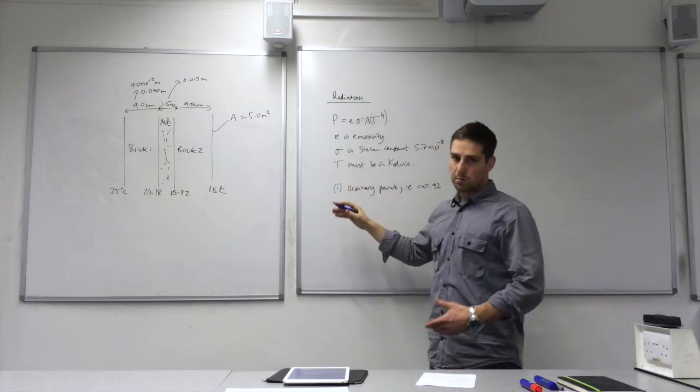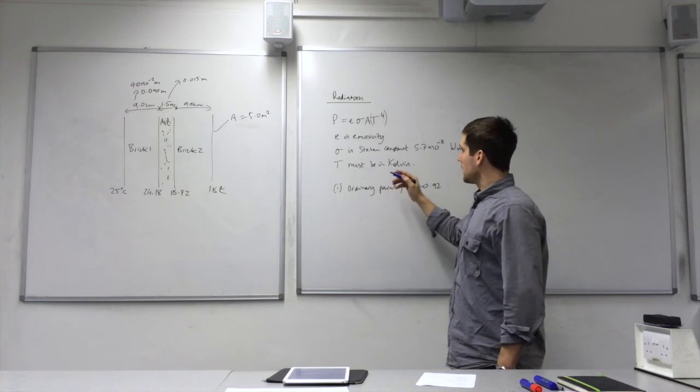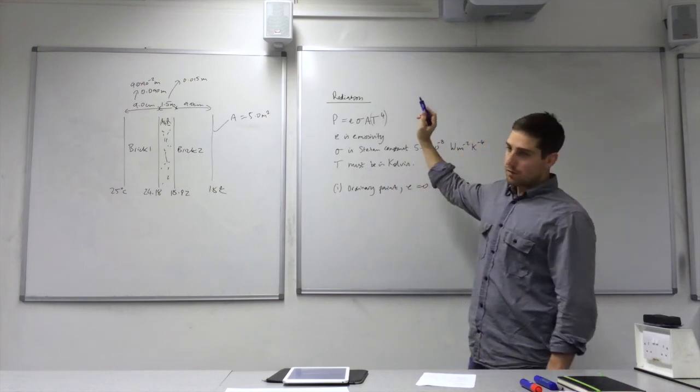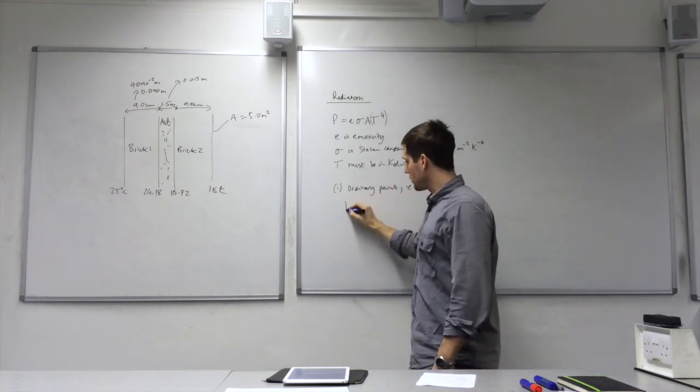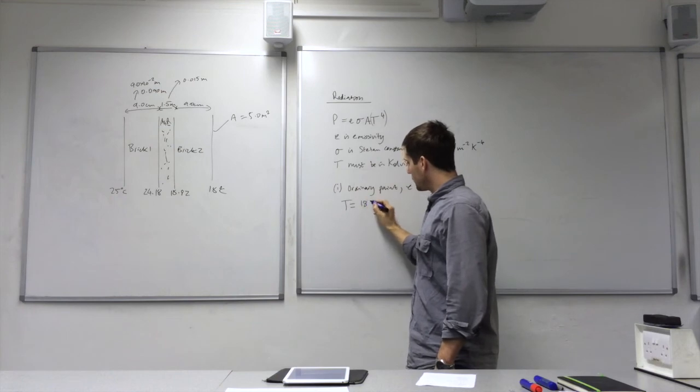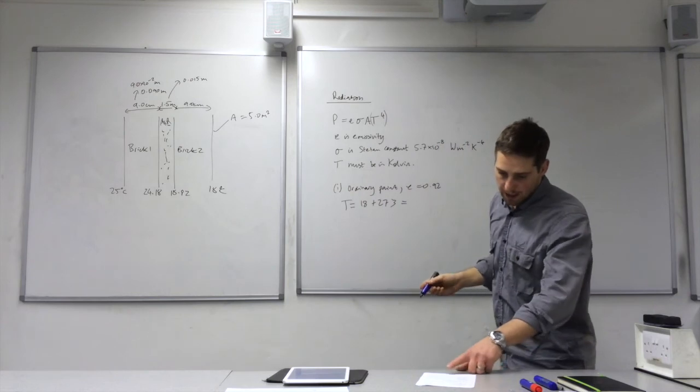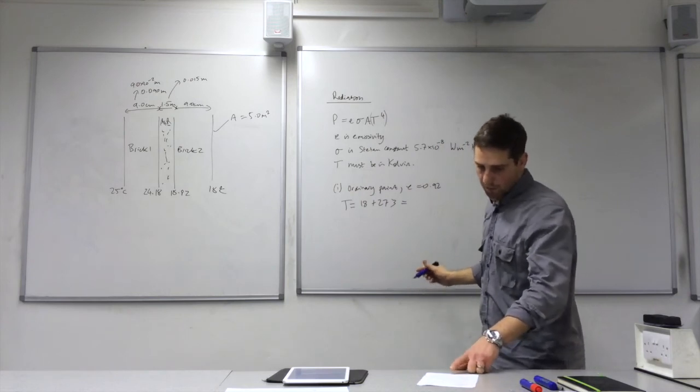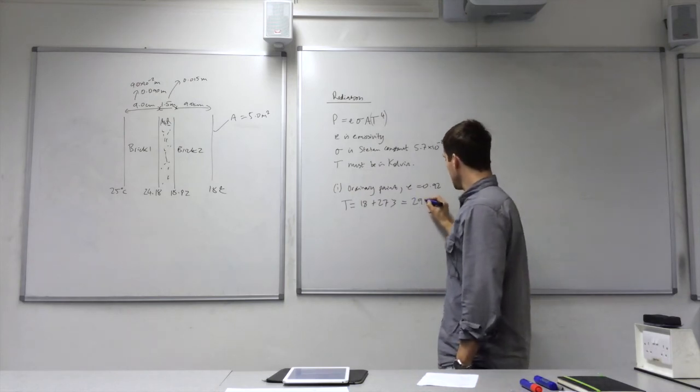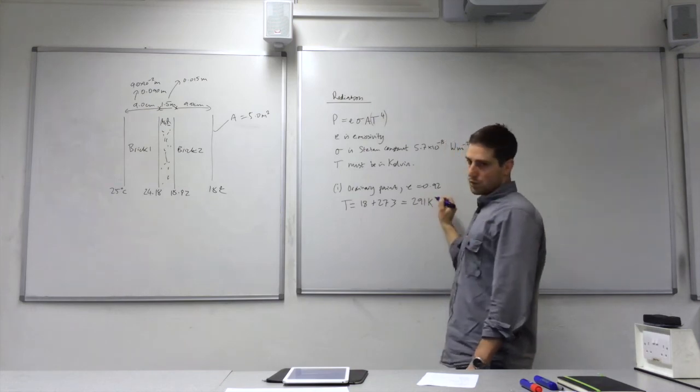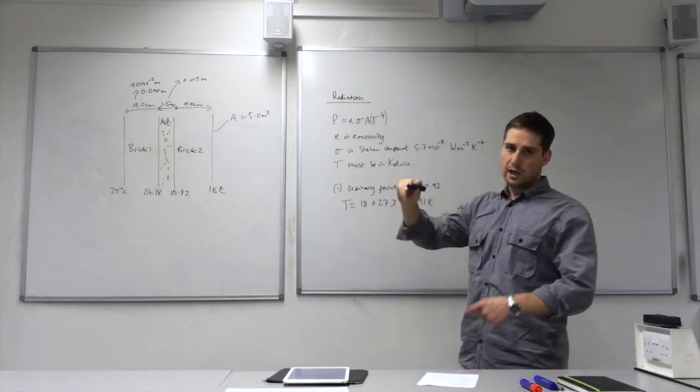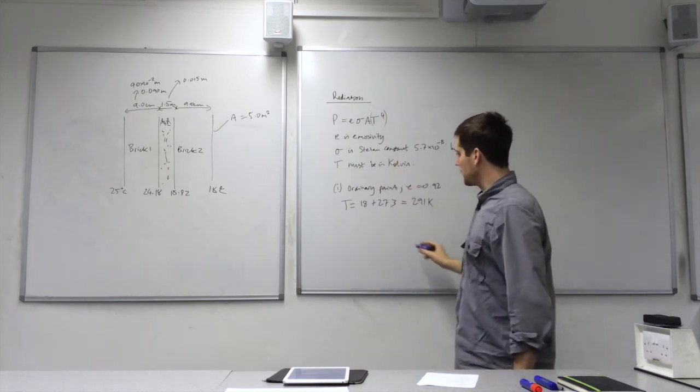So we can just plug everything straight into the equation, except for the temperature. So the temperature is 18 degrees C plus 273, to turn it into Kelvin, which is 291. So we'll need to use that. Now, that's not going to change for situation 2, so we'll be able to use that again as well.